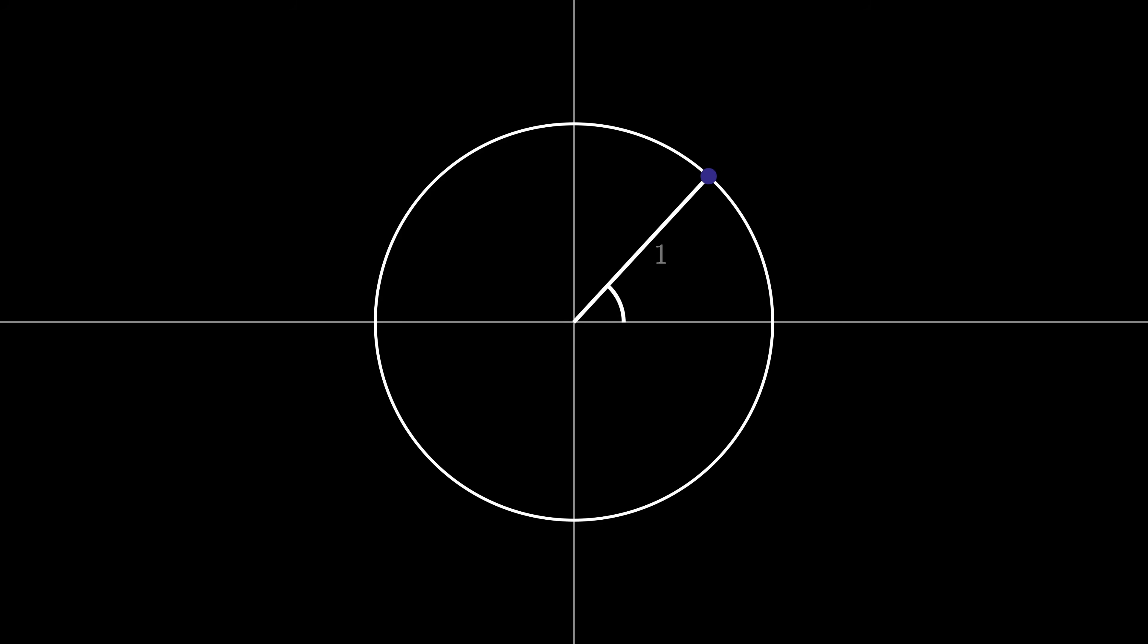Now imagine that we rotate the radius some angle theta. Then the vertical distance between the point on the circle and the x-axis is called the sine of theta, while the horizontal distance between the point and the y-axis is called the cosine of theta. This means that the point on the circle has coordinates cosine theta, sine theta.